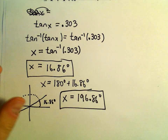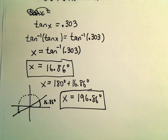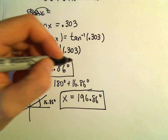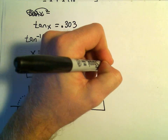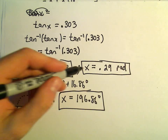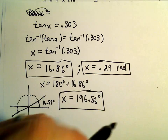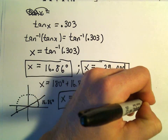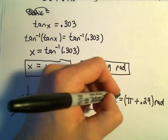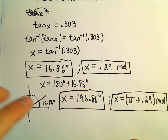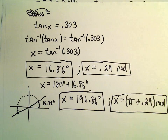We can also do this in radians. Taking arctangent of 0.303 in radian mode, I get x equals approximately 0.29 radians. So the first solution is 16.86 degrees or 0.29 radians. For the quadrant 3 solution, we take π radians and add 0.29 radians. Those are our two solutions in degrees and radians for the first equation.